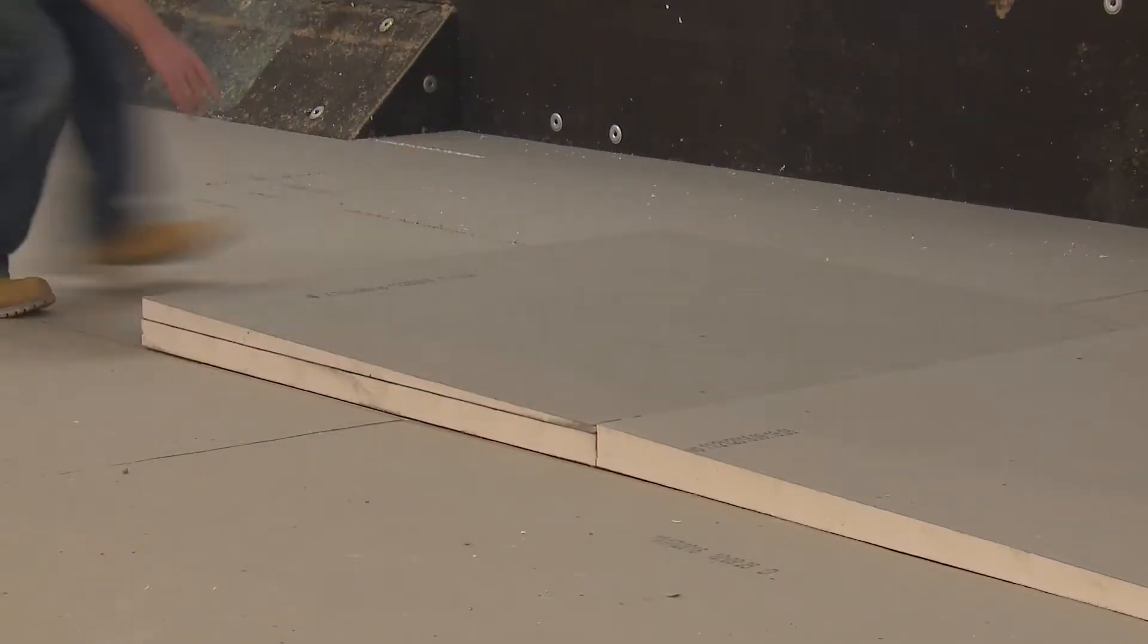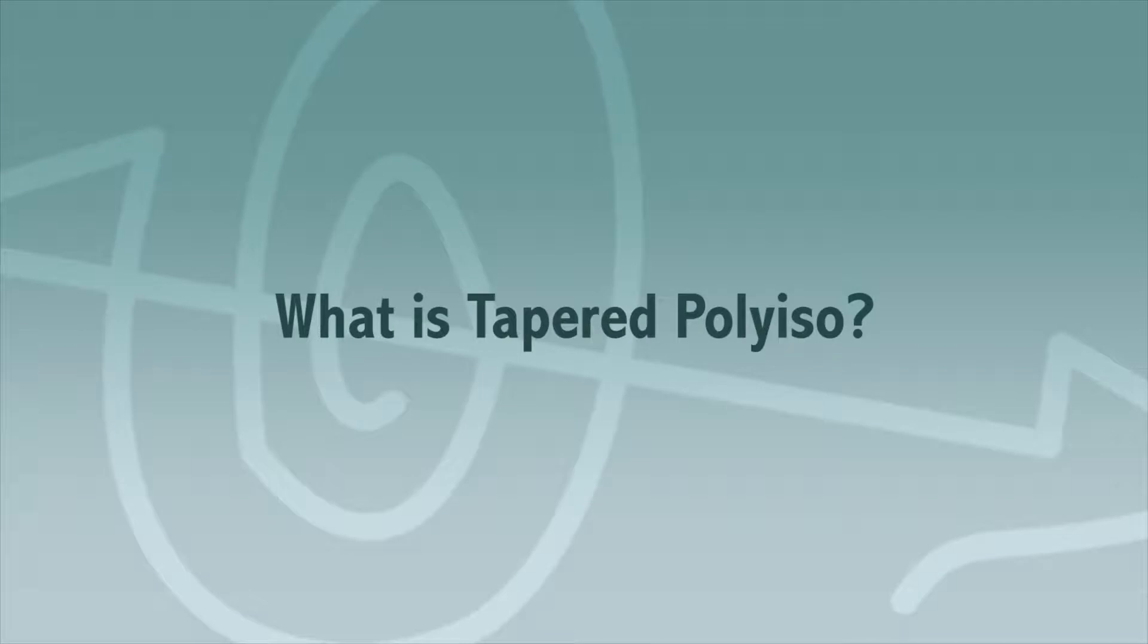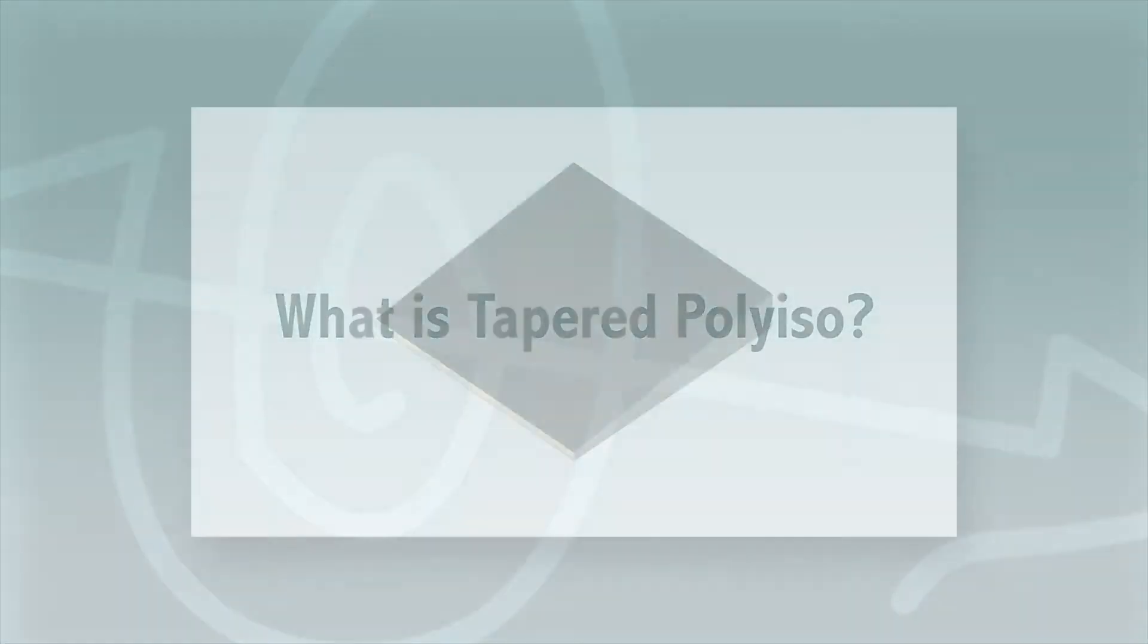Let's start with some of the basics. What is Tapered Poly-ISO? Tapered Poly-ISO is typically a 4x4 foot piece of rigid foam insulation, where one side is thicker than the other, making a sloped panel. Slopes come in a variety of thicknesses, ranging from 1/16th of an inch to 1 1/2 inch per foot.